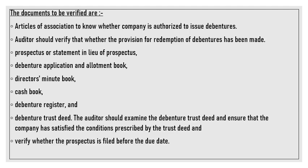Documents to verify for debentures: first, the articles of association, to check whether the company has the authority to issue debentures and the maximum amount permitted. The auditor should verify whether the provision for redemption of debentures has been made.